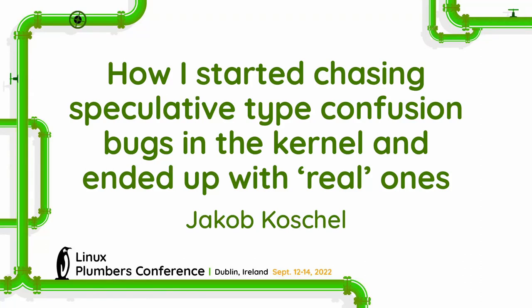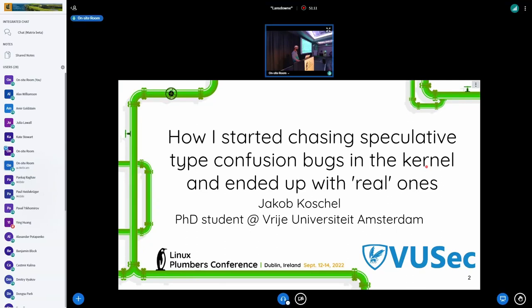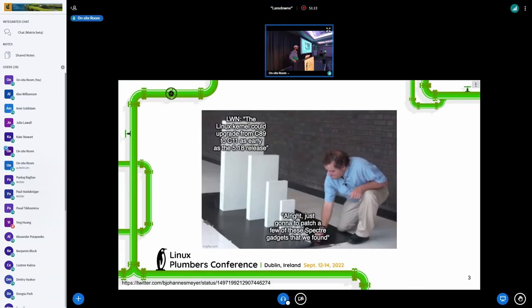Hello everybody. This is the story I'll talk about today. As a small teaser, I'll start with the meme my co-author created. All we wanted to do was make a patch for small Spectre gadgets in the kernel, and in the end we ended up with an LWN article that made the kernel upgrade from the C standard C89 to C11. This is roughly what I'm going to be speaking about today.